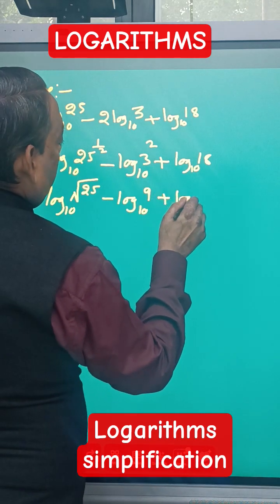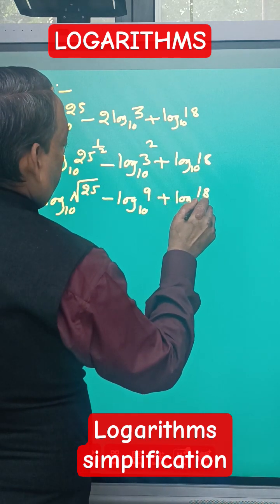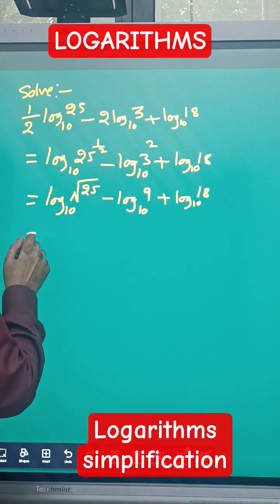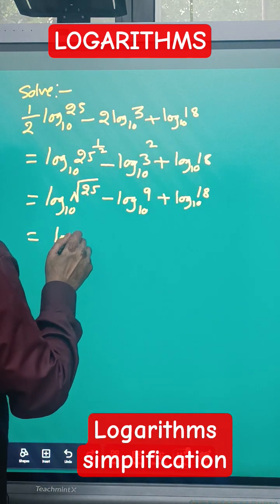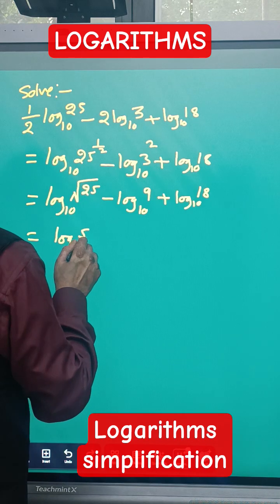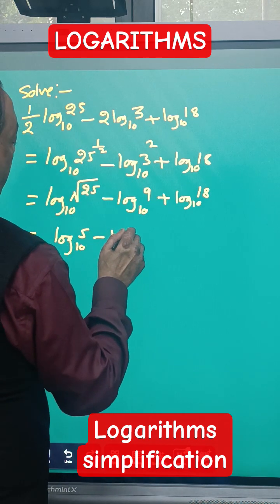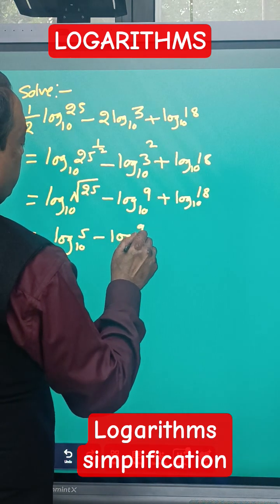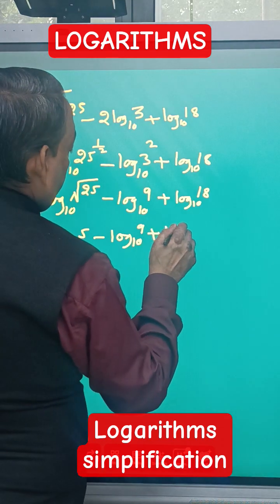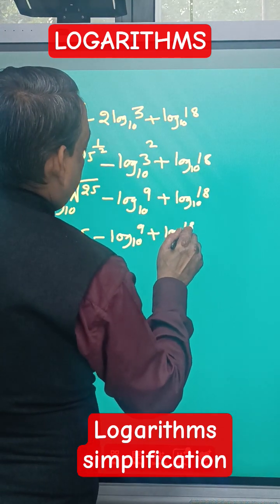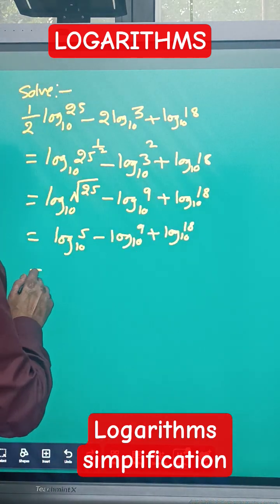Okay, now this also simplifies. This becomes log 5 to the base 10 minus log 9 to the base 10 plus log 18 to the base 10.